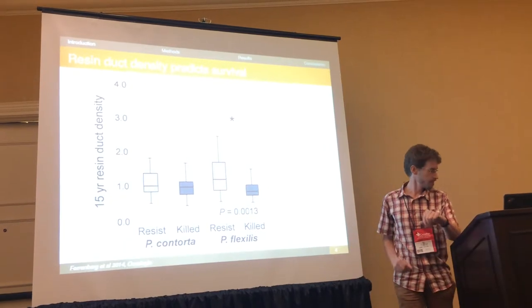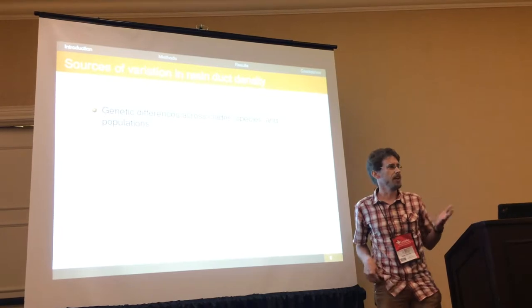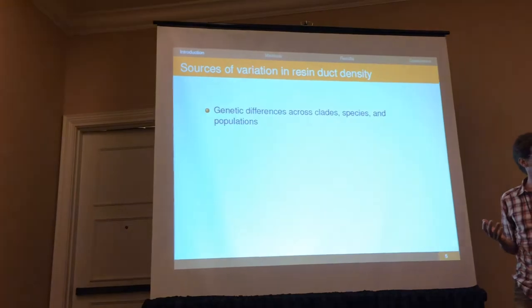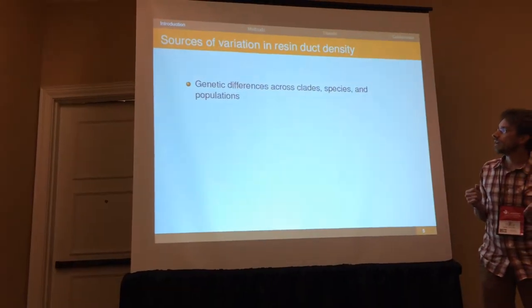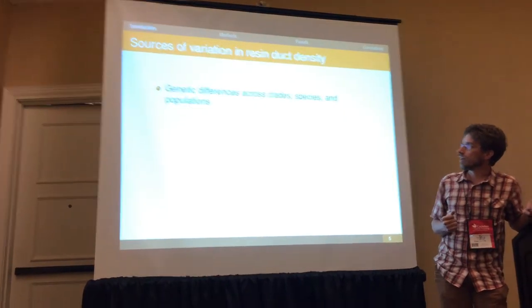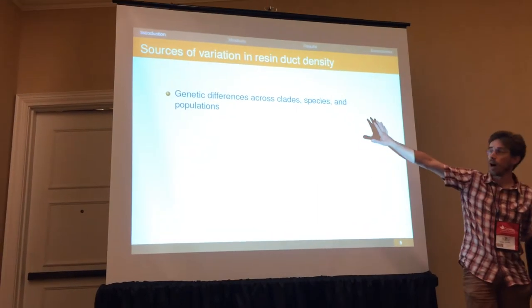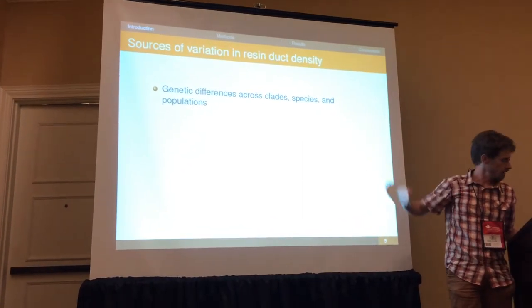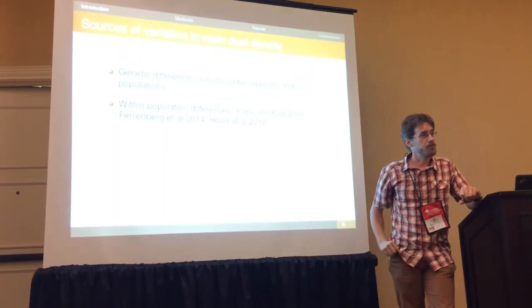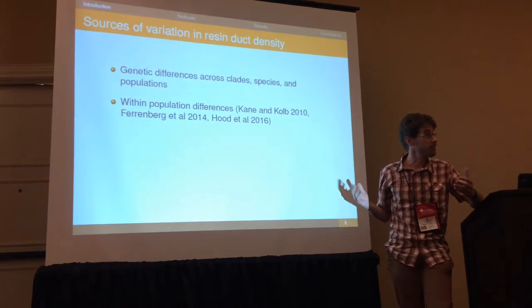So how does resin duct density vary and why? Different species with different ecological strategies might have different absolute numbers of resin ducts — due to ecology and/or genetic history. There have also been some population differences found, as well as within-population differences: trees growing side by side that are presumed to reflect genetic differences in those trees, though that hasn't been formally tested.